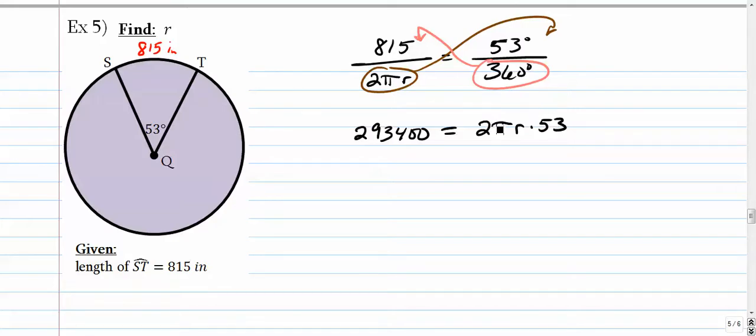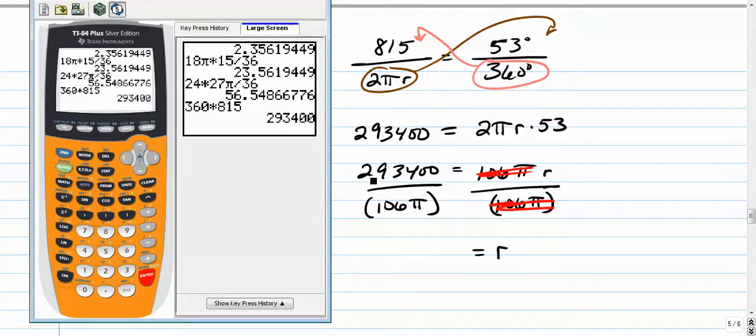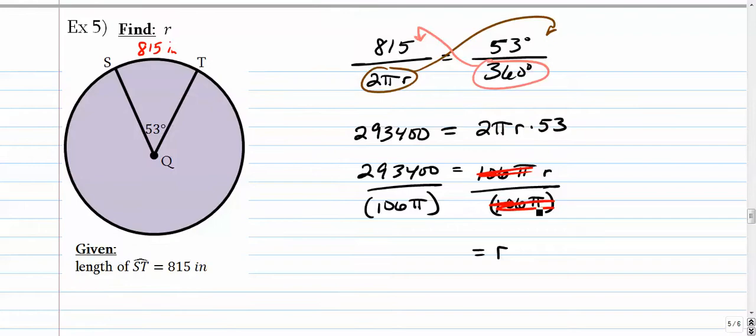2πr times 53. So let's first, I guess, multiply the numbers: 2 times 53 is 106πr is equal to 293,400. Now we want to get r by itself, so we're going to divide everything by 106π. You can divide them at the same time; just put them in parentheses in your calculator. This whole thing cancels out with this whole thing, leaving just r. And r is equal to, in our calculators we're going to go that number, 293,400, divided by parentheses 106 times π. You don't use parentheses, you're gonna get the wrong answer. We're going to get the wrong answer here. 881.058, and that is in inches.